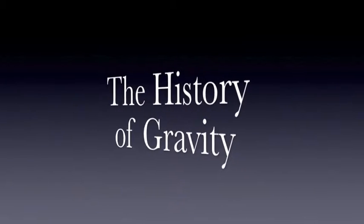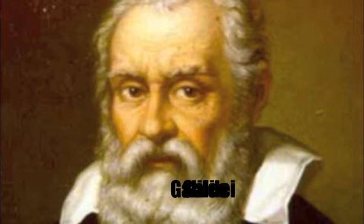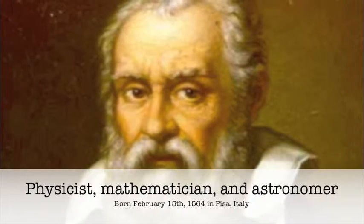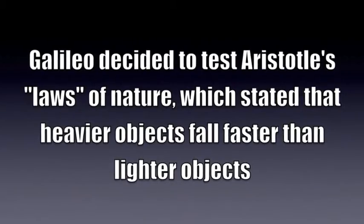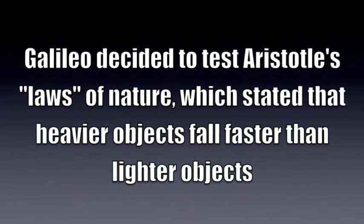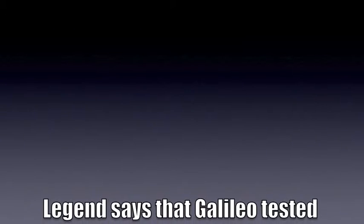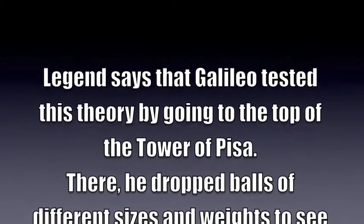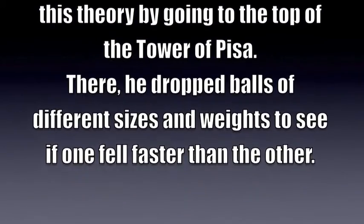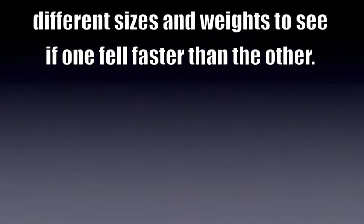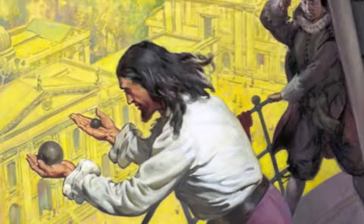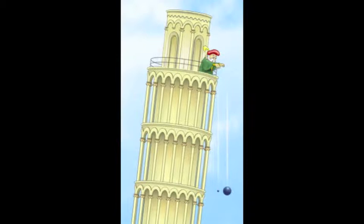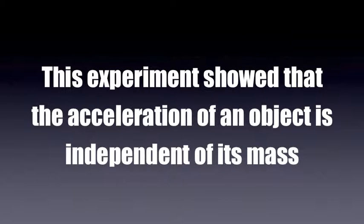The history of gravity. Galileo decided to test Aristotle's laws of nature, which stated that heavier objects fall faster than lighter objects. Legend says that Galileo tested this theory by going to the top of the Tower of Pisa, where he dropped balls of different sizes and weights to see if one fell faster than the other. This experiment showed that the acceleration of an object is independent of its mass.